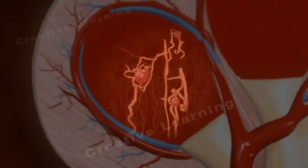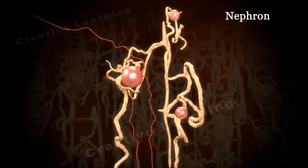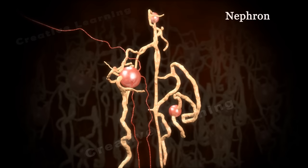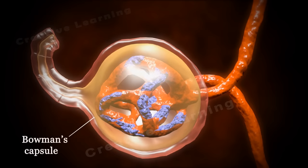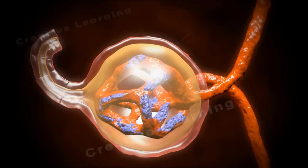The nephron is the kidney's functional unit. At the beginning of the nephron, the glomerulus is a network — a tuft of capillaries — that performs the first step of filtering the blood. The glomerulus is encased in a thin, double-walled capsule called Bowman's capsule. The space inside the capsule surrounding the glomerulus is called Bowman's space.